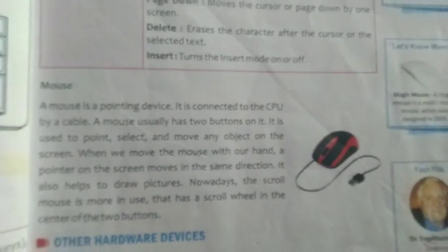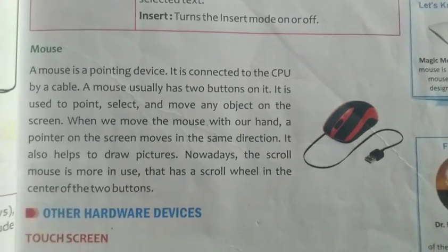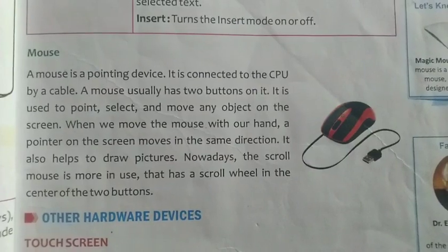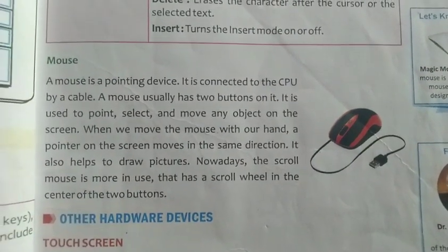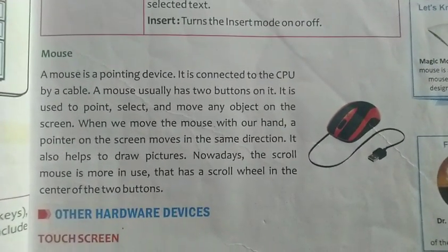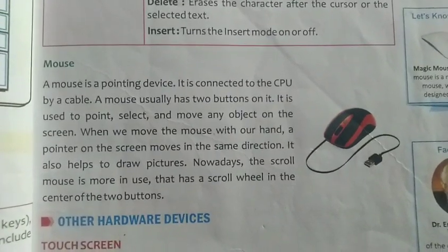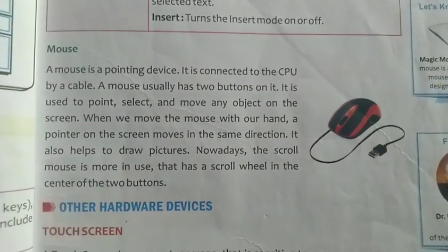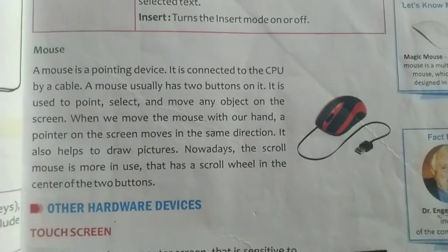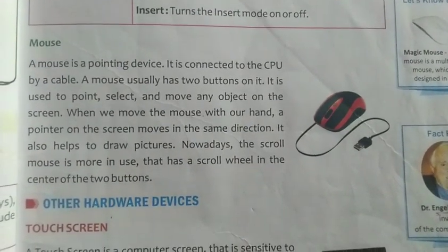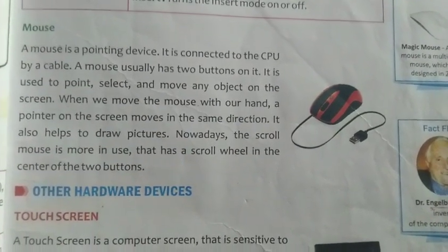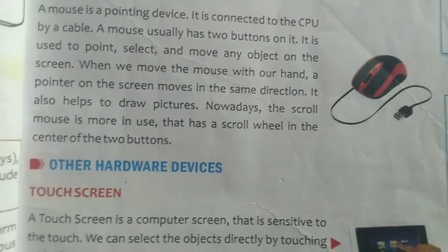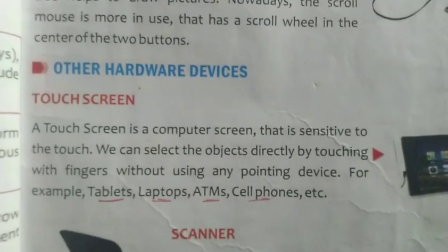Next comes the mouse. Nowadays various types of mouse are available — wireless mouse and mouse with a wire, which has to be connected at the back of the CPU. In the mouse we have left click, right click, and in the middle a scroll wheel to move up and down.